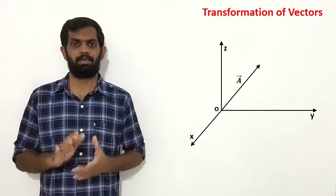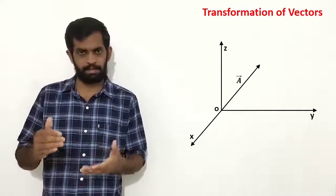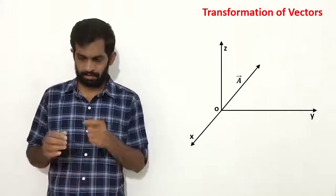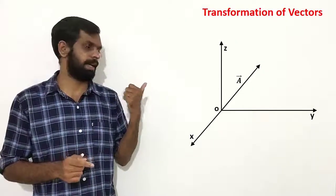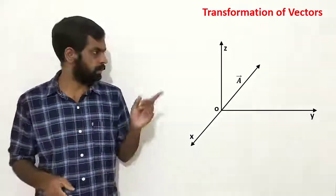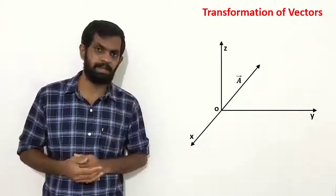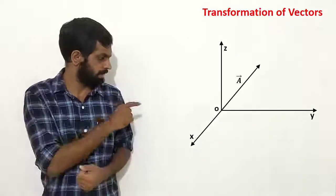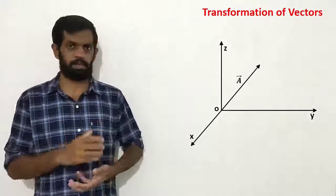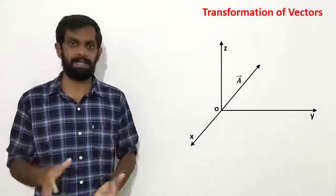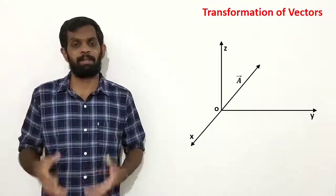I am going to rotate the coordinate. Here you can see axes x, y, and z, in which a vector A is shown. Now I am going to rotate these axes. You can rotate about any axis — about the x-axis, about the y-axis, or about the z-axis. The vector A can be represented as ax·i plus ay·j plus az·k in the original coordinate system.